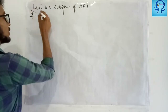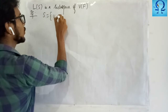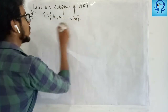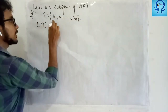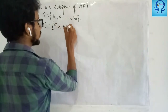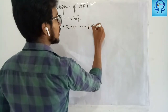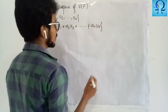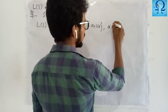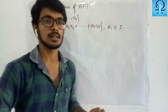Let S be any non-empty set, say S equals {v1, v2, ..., vn}. Then L(S) consists of entries of the form alpha_1·v1 plus alpha_2·v2 plus ... plus alpha_n·vn, where the scalars alpha_i are taken from the field F.